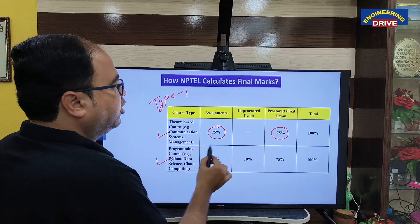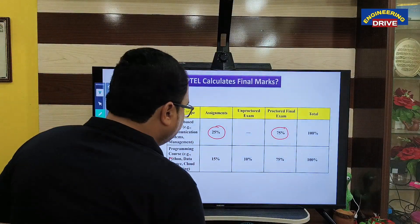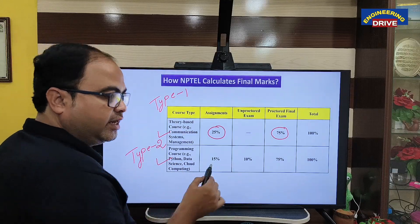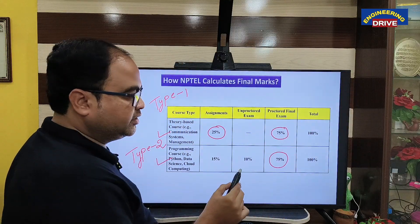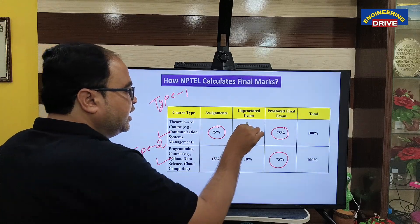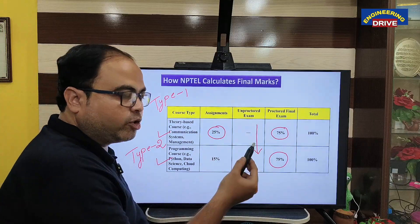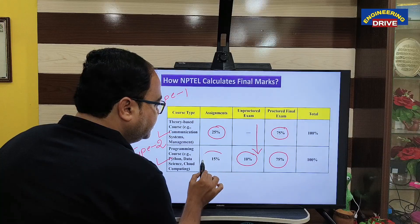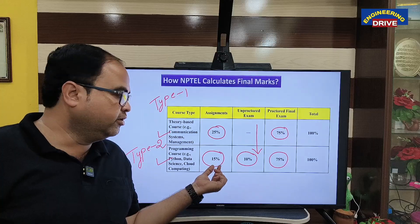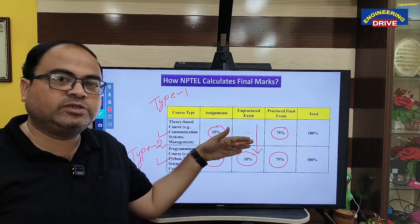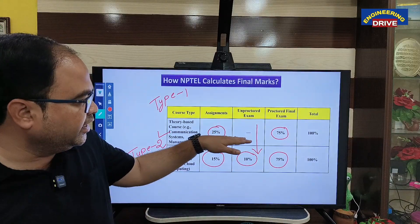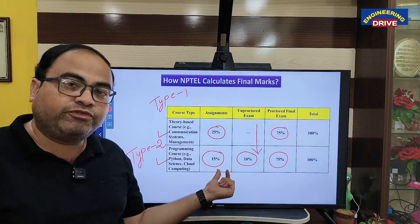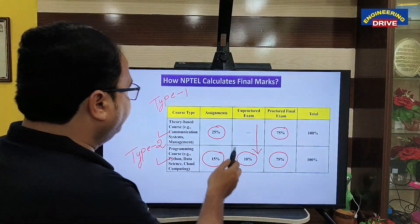There are some courses based on programming that fall under Type 2. The proctored final exam remains 75%, but the difference is the addition of an unproctored exam. The unproctored exam carries 10% of the marks, while assignments carry 15%. So 15% plus 10% equals 25%. In Type 1 there is no unproctored exam — just direct assignments at 25% — whereas programming courses have assignments at 15% and an unproctored exam at 10%.